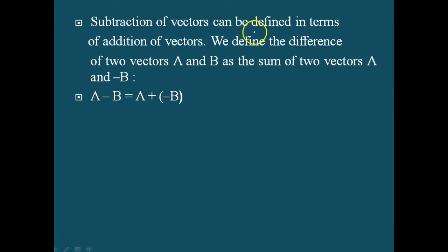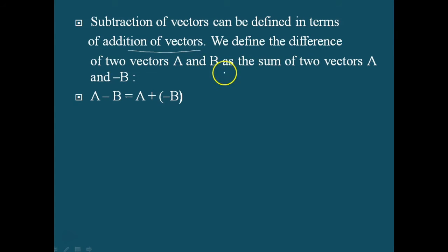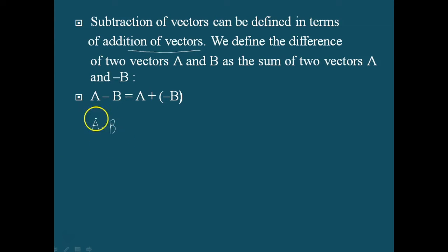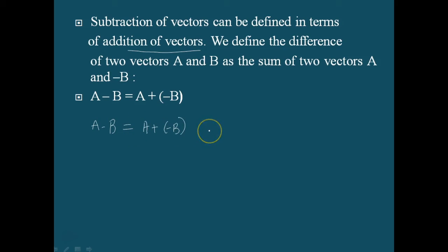Subtraction of vectors can be defined in terms of addition of vectors. We define the difference of two vectors a and b as the sum of vectors a and minus b. So the difference a minus b can be written as the summation of a plus minus b. Therefore, subtraction can be defined in terms of addition of vectors.